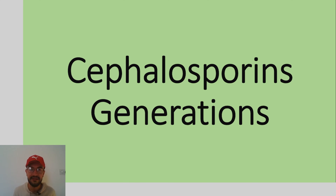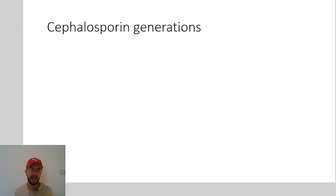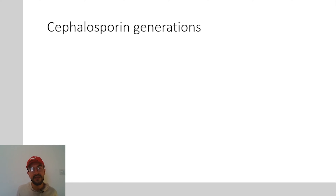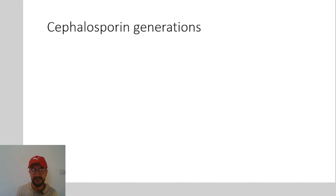We have two videos about the cephalosporins. This one is going to be about the cephalosporin generations and the next video is going to be about the cephalosporin pharmacology. So let's start. Regarding cephalosporin generations, they are classified into five generations according to the spectrum of antimicrobial activity.